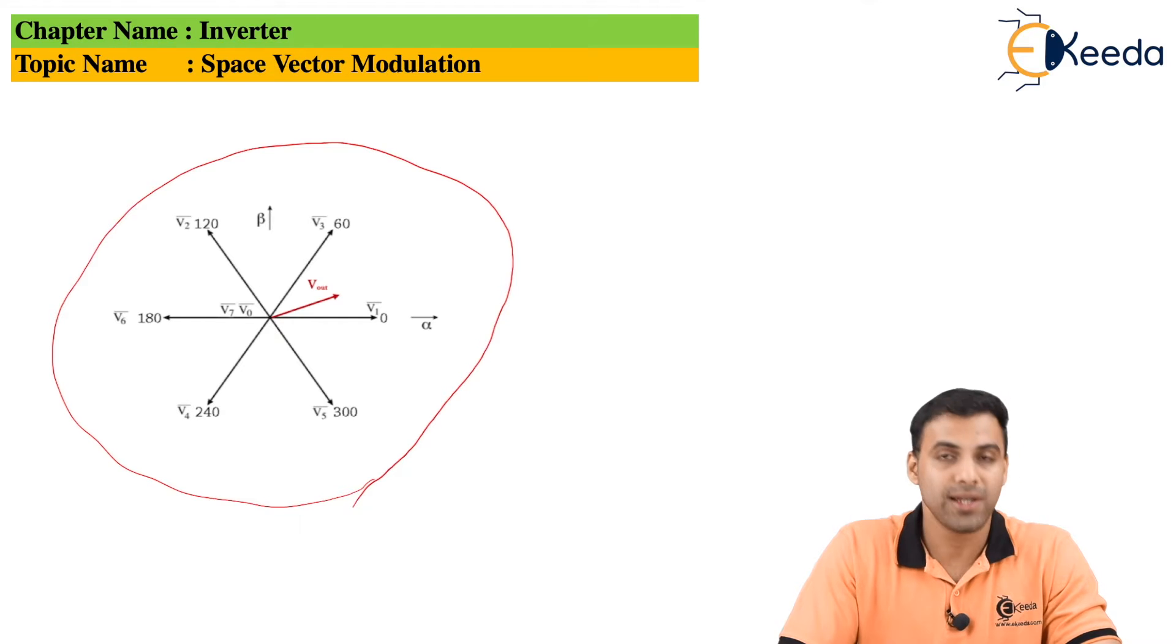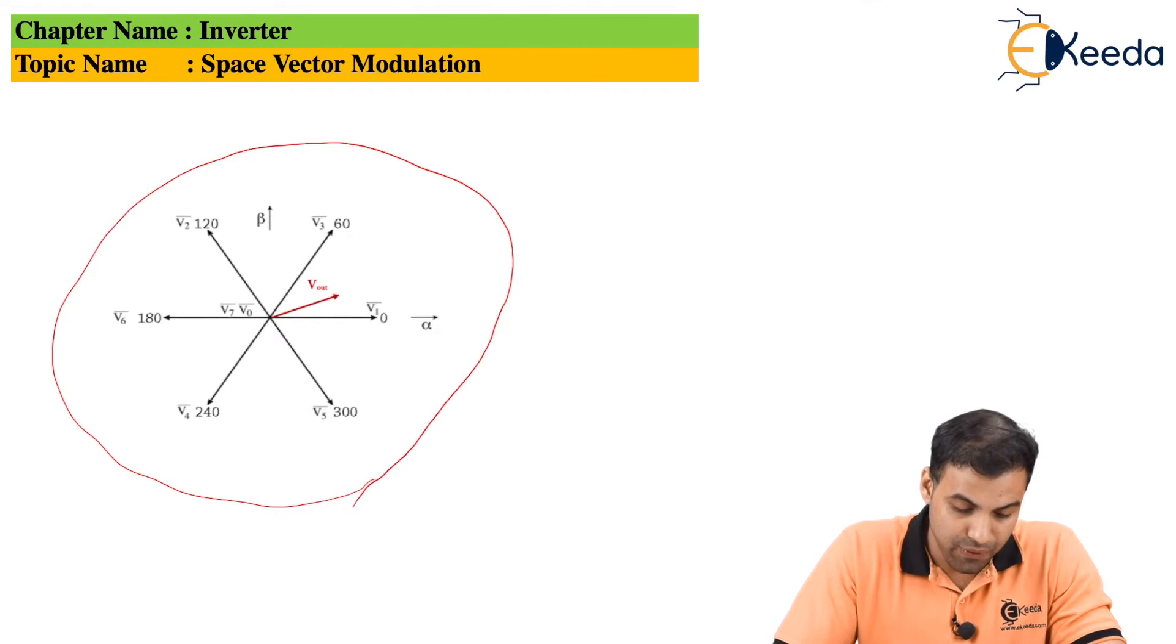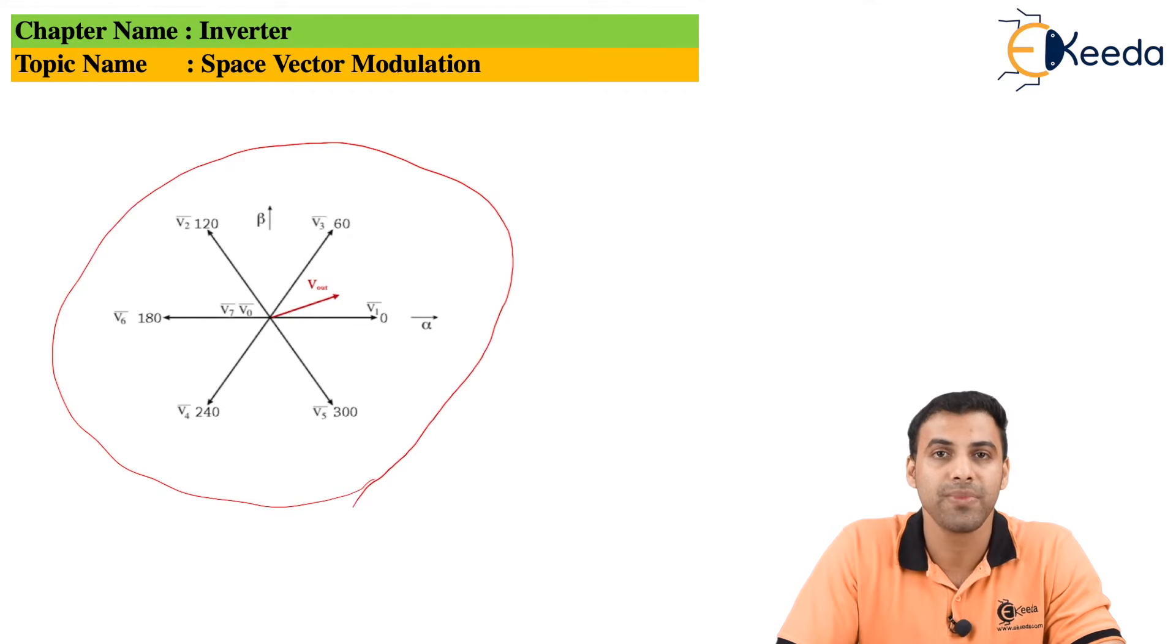If we consider a three-phase AC converter, V1, V2, V3, V4, V5, and V6 are the three switching voltages or the voltages across the switches. In case of a three-phase AC converter, we use six switches and all the voltages are apart from each other by a phase voltage of 60 degrees each.